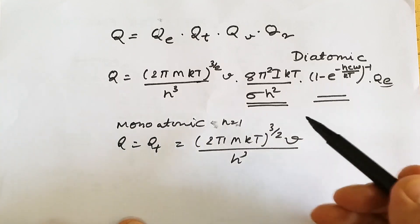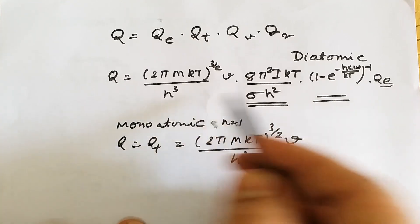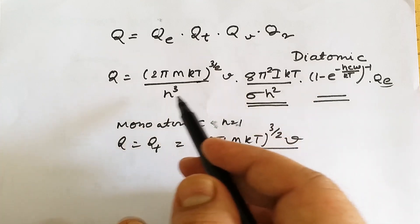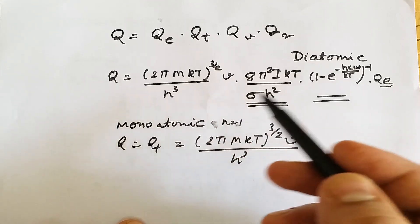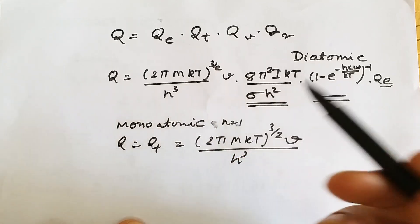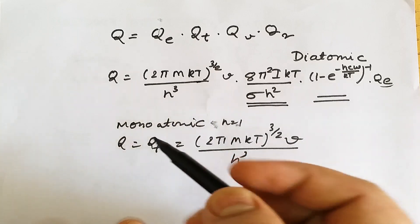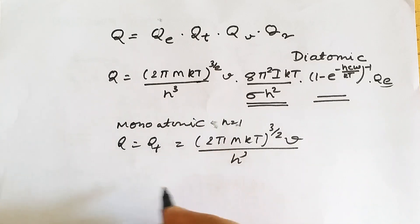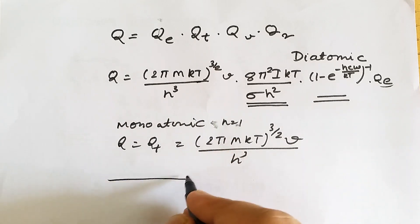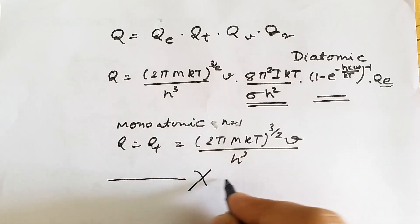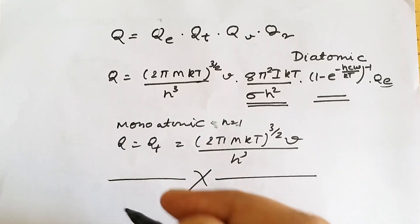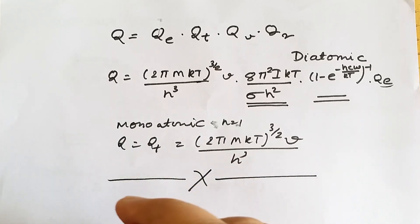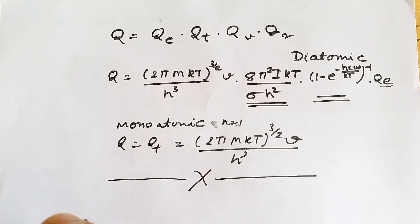Depending on the type of molecule, if we have a polyatomic molecule, it will again be the product of all four contributing partition functions. I hope the partition functions are clear. Thank you very much. If you have any doubts, please write in the comments so they can be resolved.